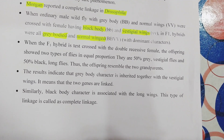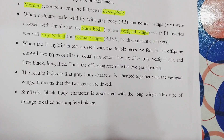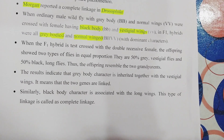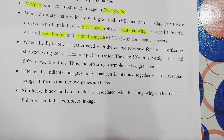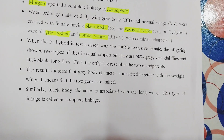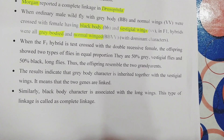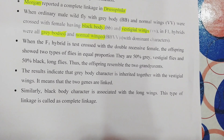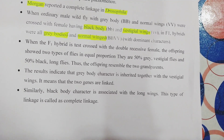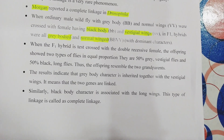I will explain what crossing over is in the next session. In complete linkage, genes do not tend to separate during gamete formation — they are transferred as-is to the next generation, which is why we cannot get recombinants. Grey body character is inherited together with normal wings, and black body character is associated with vestigial wings. Both are linked genes, so they are not separated during gamete formation. This type of linkage is complete linkage.